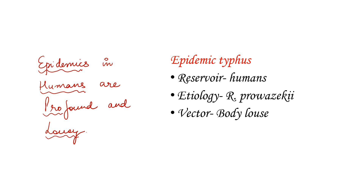The first mnemonic is: 'Epidemics in humans are profound and lousy.' So for epidemic typhus, the reservoir is humans, the etiological agent is Rickettsia prowazekii, and the vector is body louse. This is how we remember the reservoir, etiology, and vector of epidemic typhus.